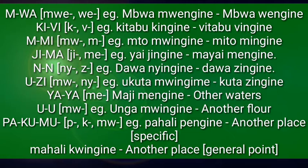Here are the noun class prefixes used with ingine. M-Wa uses Mw- and W-. Ki-Vi uses Ki- and Vi-. M-Mi uses Mw- and M-. Ji-Ma uses Ji- and Me-. N-N or Zi uses N- and Z-. U-Zi uses Mw- and N-. Ya-Ya uses Me- and is a plural noun — it doesn't have a singular. U-U uses Mw- and also doesn't have a singular. Pa-Ku-Mu uses Pa-, Ka-, and Mw-.